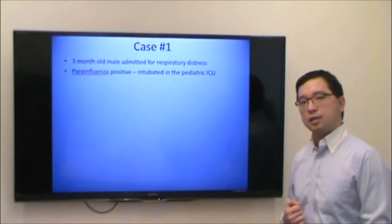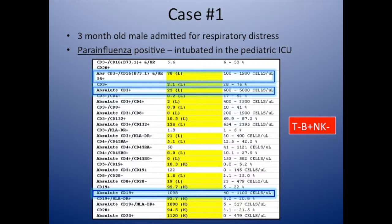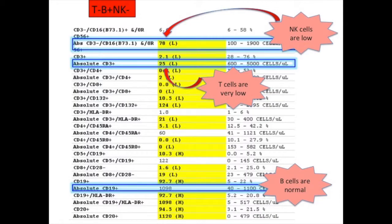Case number one: a three-month-old male admitted for respiratory distress, parainfluenza-positive, intubated and transferred to the pediatric ICU. On the initial lymphocyte panel, his CD3-positive T cell count is 25 — markedly reduced, as it should be around 4,000 to 5,000 at this age. His CD19-positive B cell population is about 1,100, which is normal. However, his natural killer cell numbers are also reduced at 78. This is a T-negative, B-positive, NK-negative phenotype.